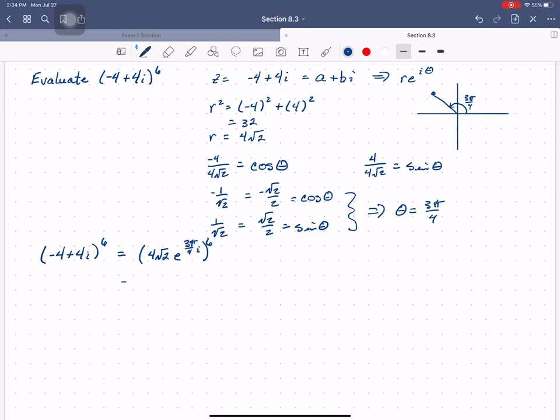So this is 4 square root 2 to the sixth power, times e to the sixth times 3 pi over 4i. Because remember that a power to a power would multiply exponents. So that's 18 fourths, which is 9 pi over 2.